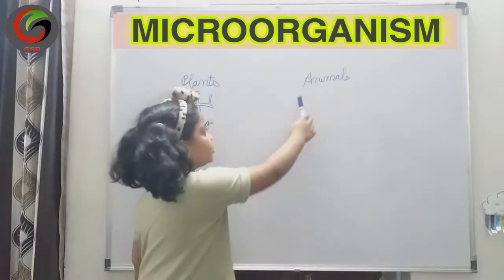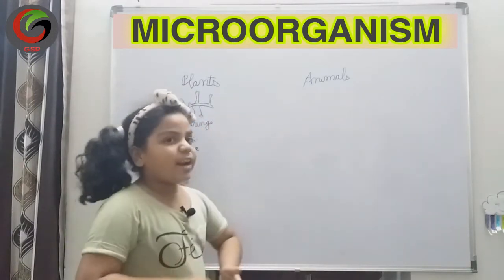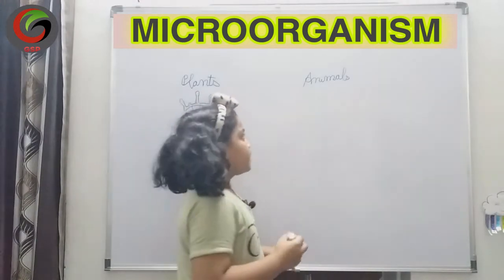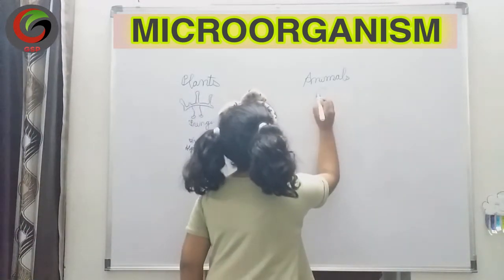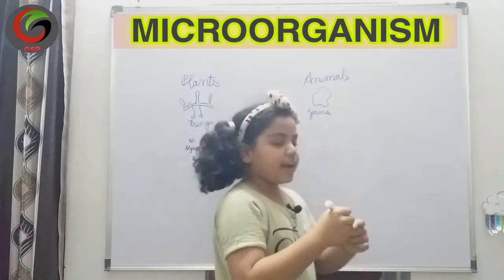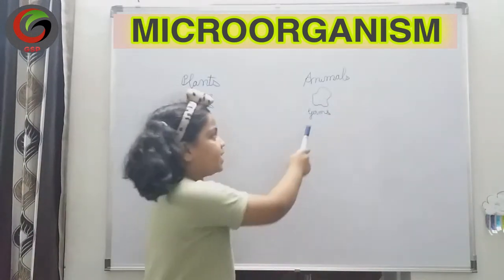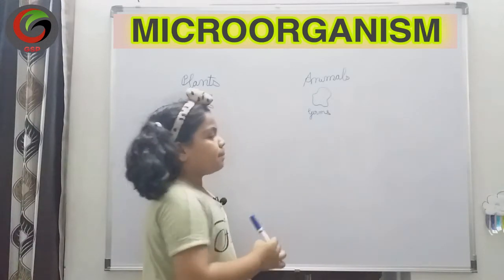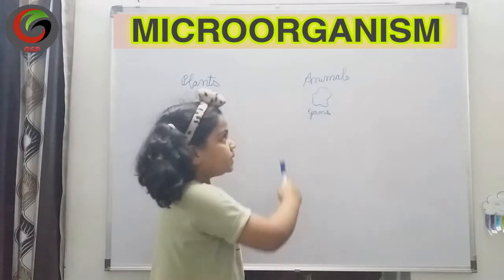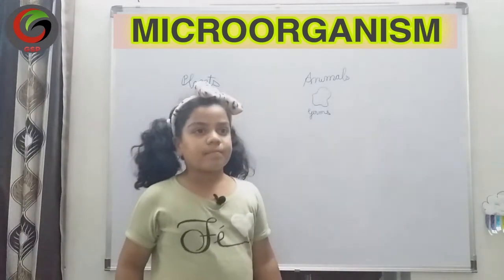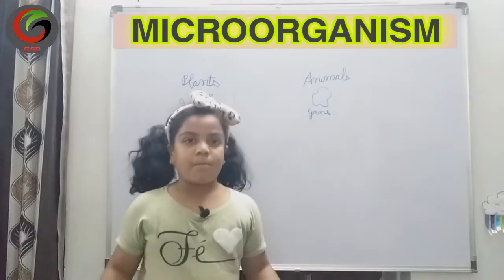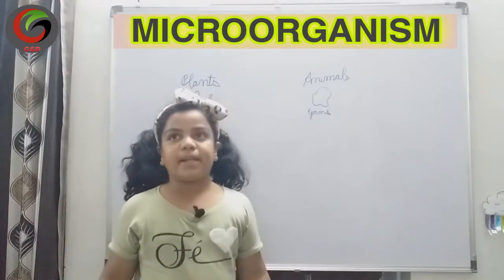Now we will learn about microscopic animals. They are of many types, shapes, colors and sizes. The first are germs. Germs are considered very dangerous and they are the biggest microorganisms. Germs mainly cause diseases and they grow in moist and dirty places.